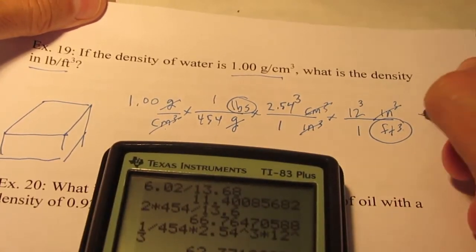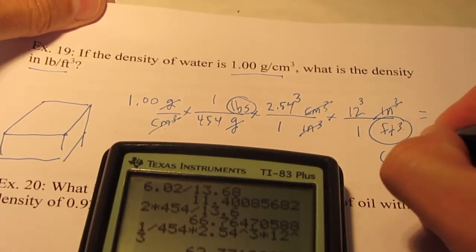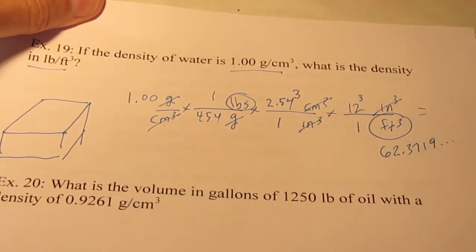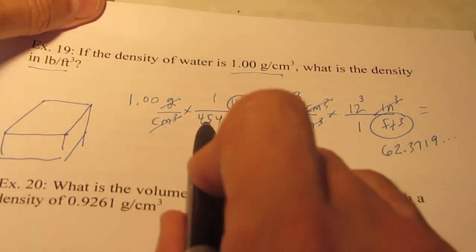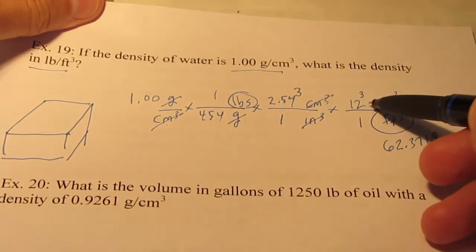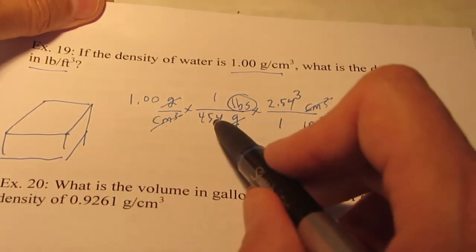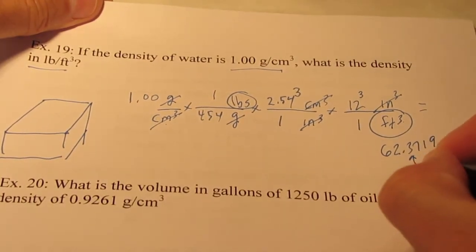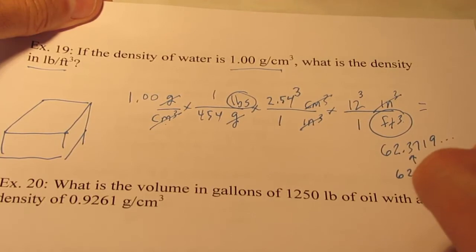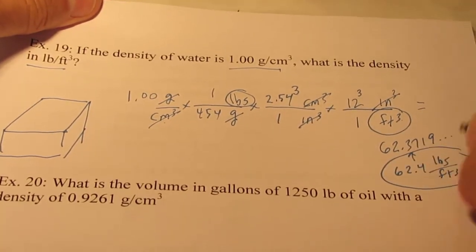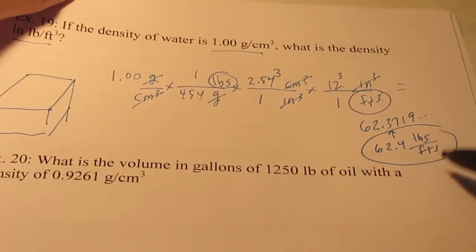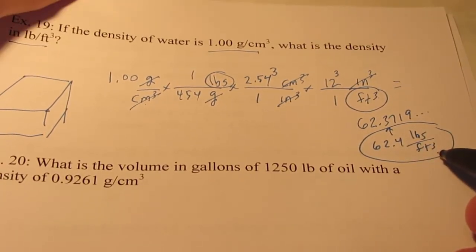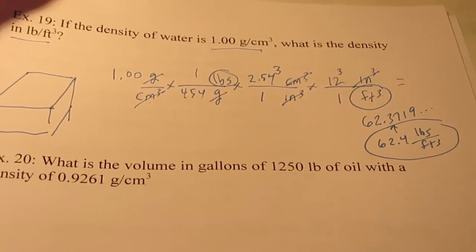Let's try it. 1 divided by 454 times 2.54 cubed times 12 cubed. Enter. My calculator says 62.3719 with some numbers after it. I'm going to call that 62.4 pounds in a cubic foot of water. So yeah, most of you could lift it. 62 pounds a cubic foot of water? I'll bet you could.